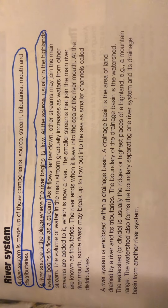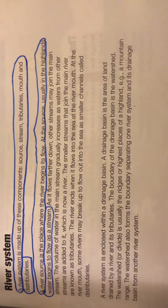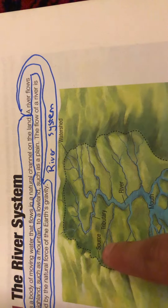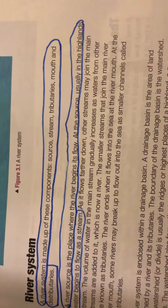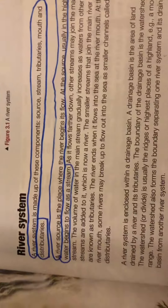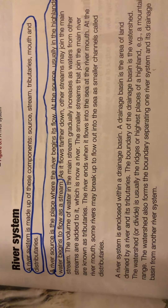A river source is a place where the river begins its flow. At the source, usually in the highlands, water begins to flow as a stream.